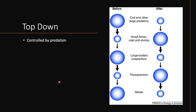The next type of food chain is the top-down. Where the bottom-up is controlled by resources, the top-down is controlled by predation. The top feeder at the top of the chain dictates what the rest of the food chain looks like.